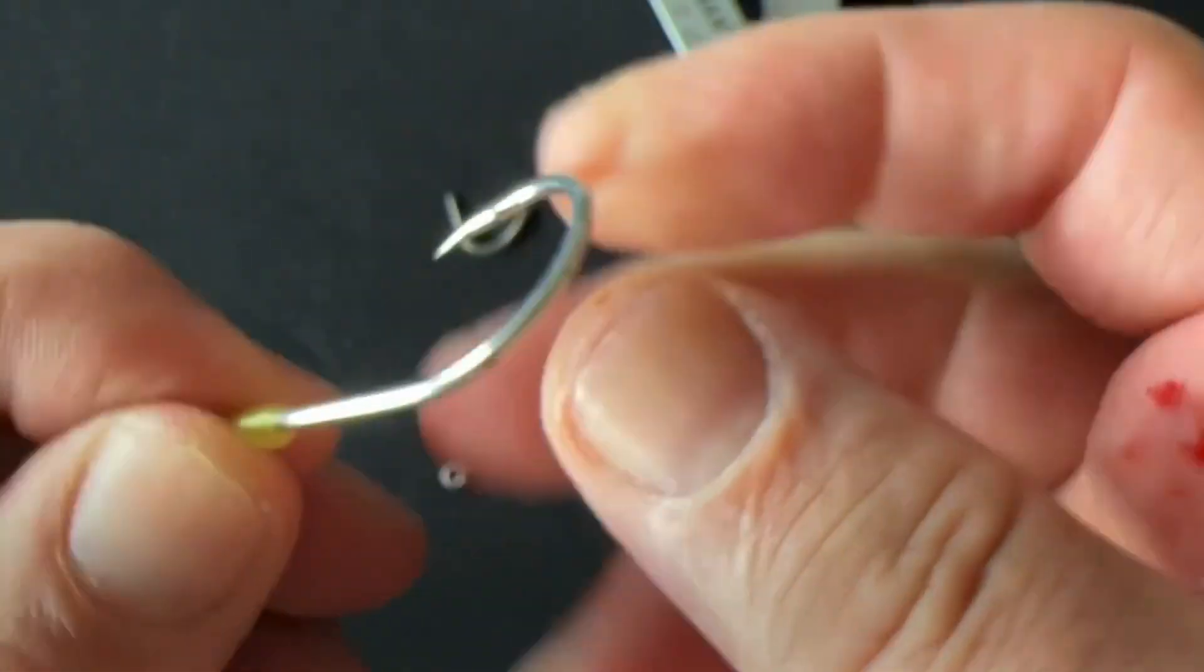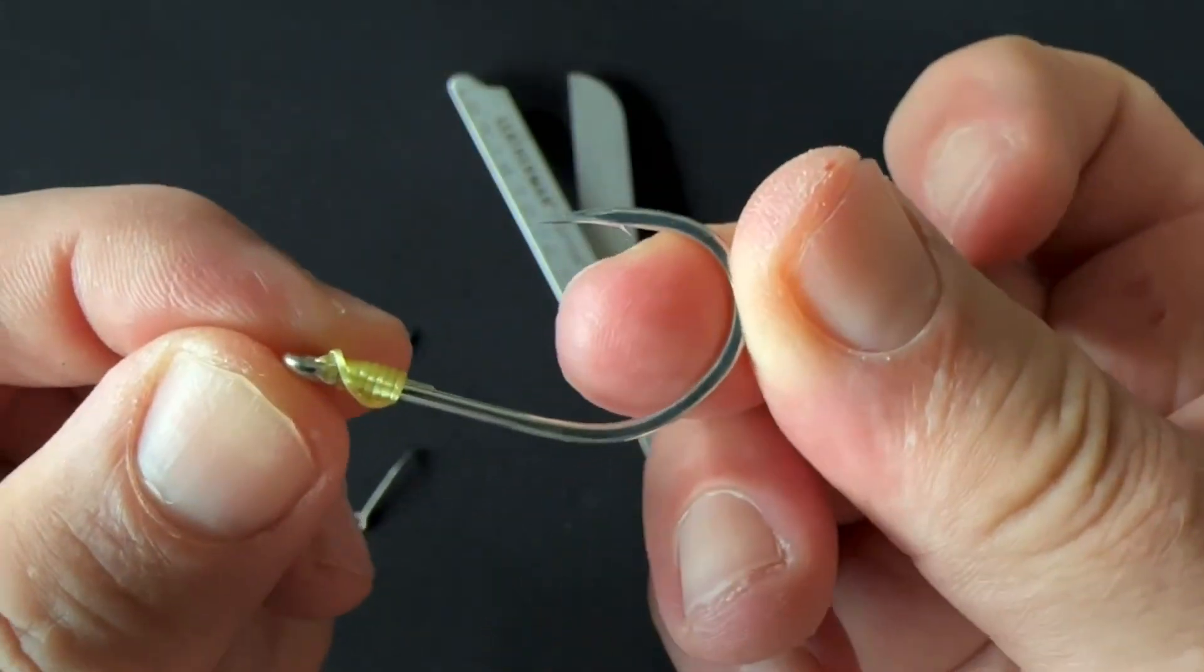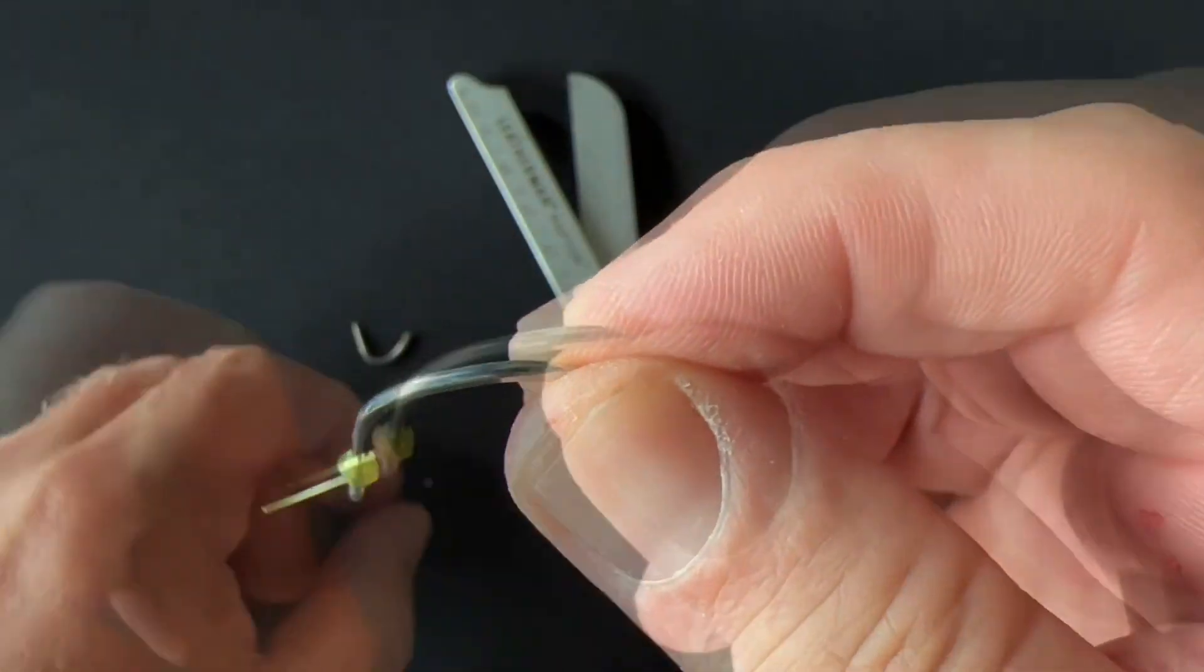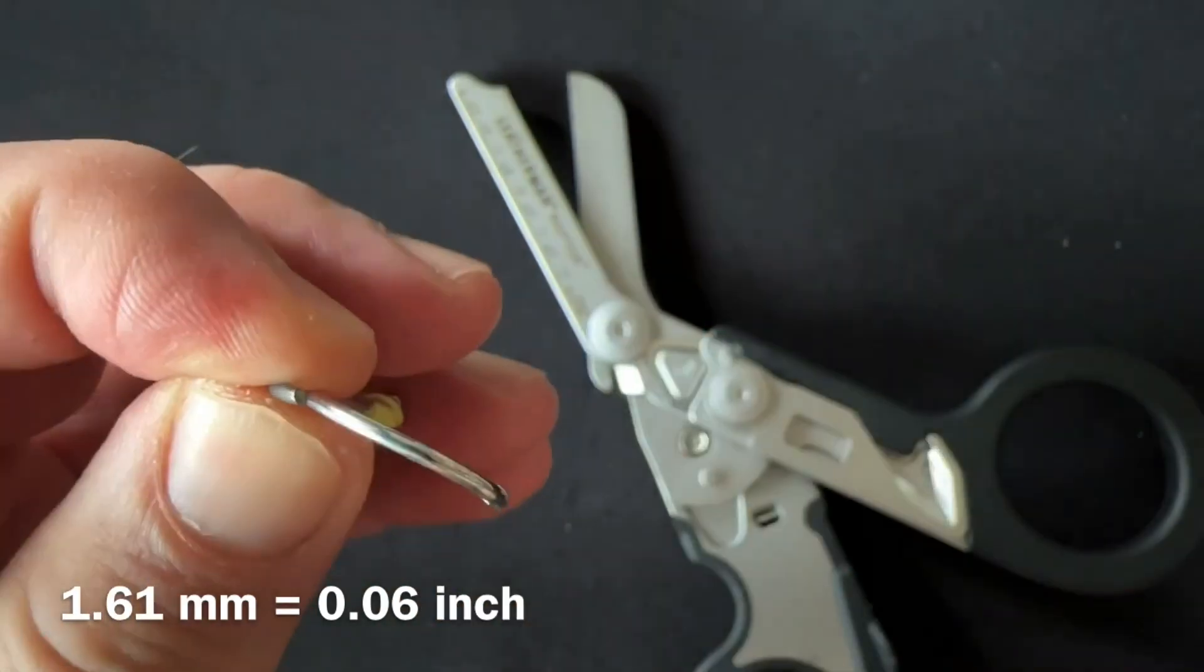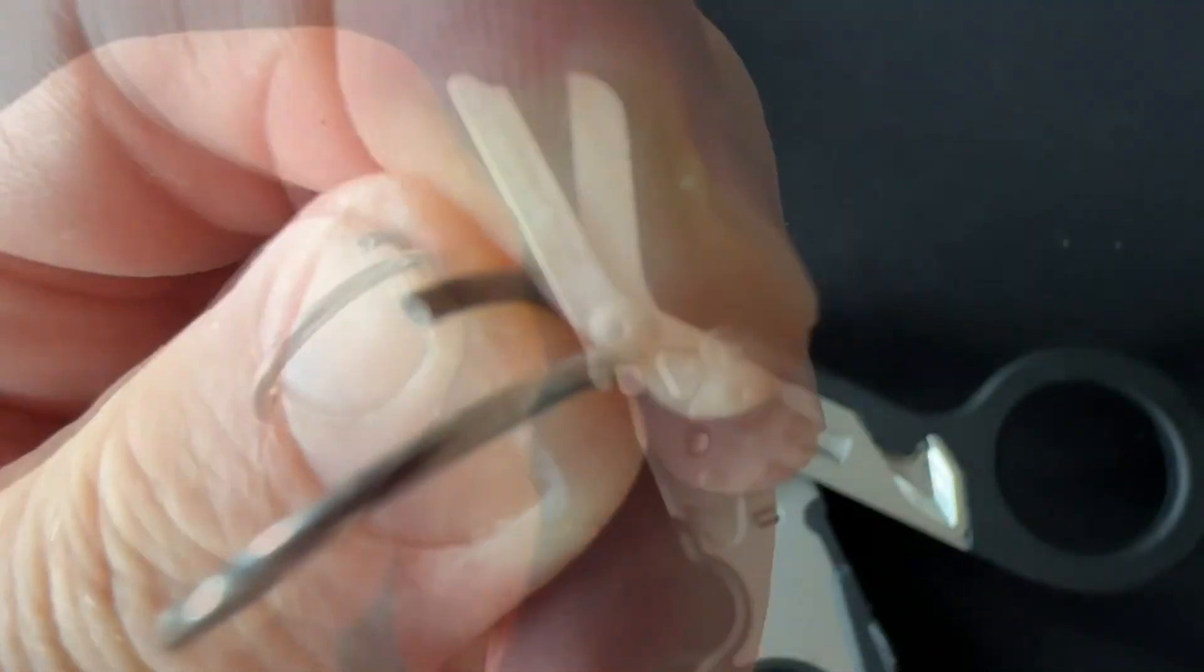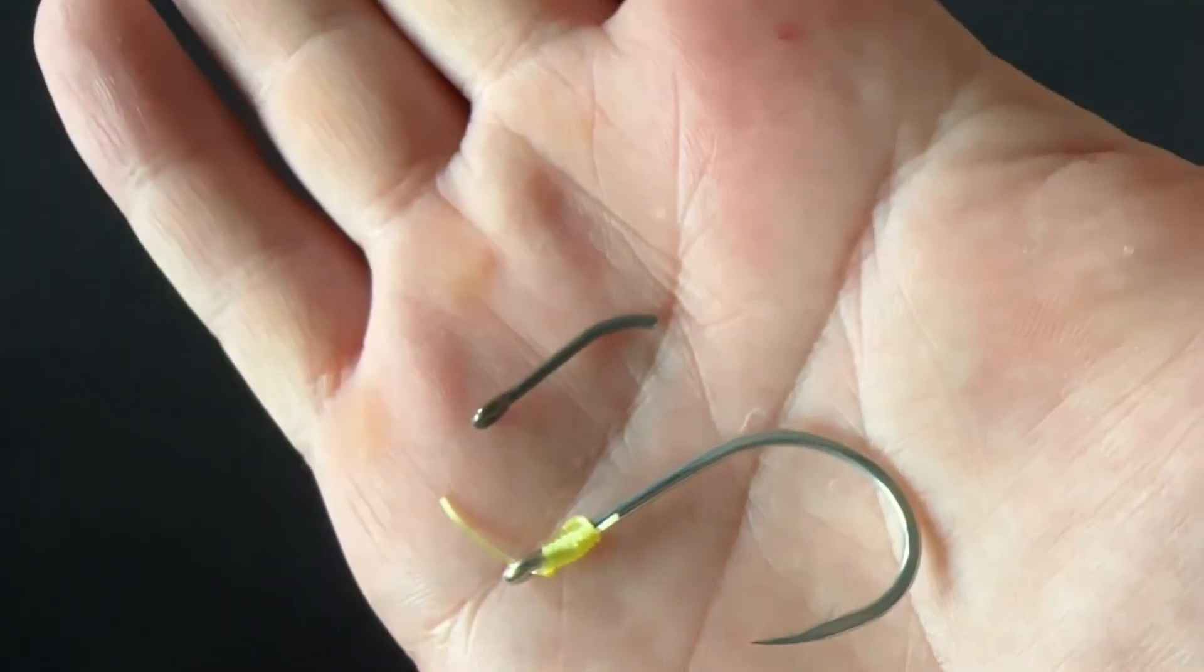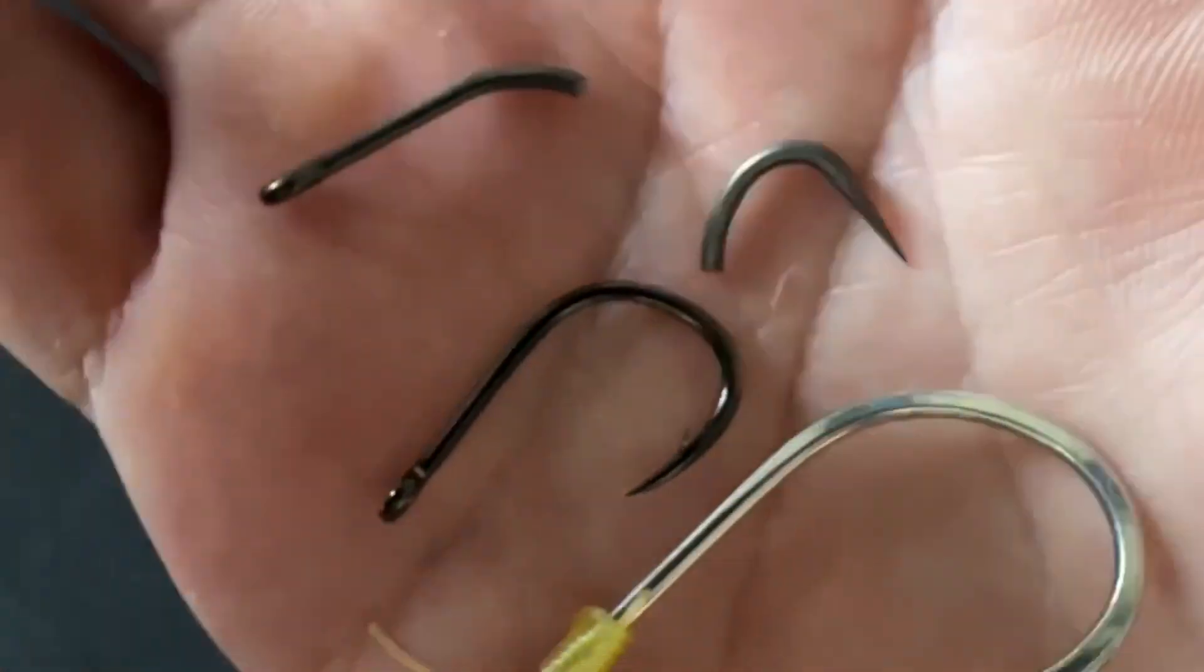You can see it's considerably thinner than the bigger hook we're looking at now. The bigger hook measures 0.06 inch or 1.6 mm. It's almost half a millimeter thicker.